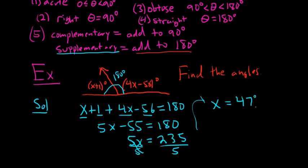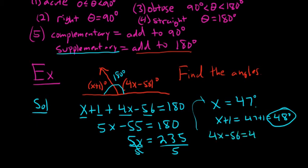So that's not our angle. One of our angles is x plus 1. So that's going to be 47 plus 1. So 48 degrees. That's our first angle. And then our other angle is 4x minus 56. So that's 4 times 48 minus 56. So that's going to be 132.